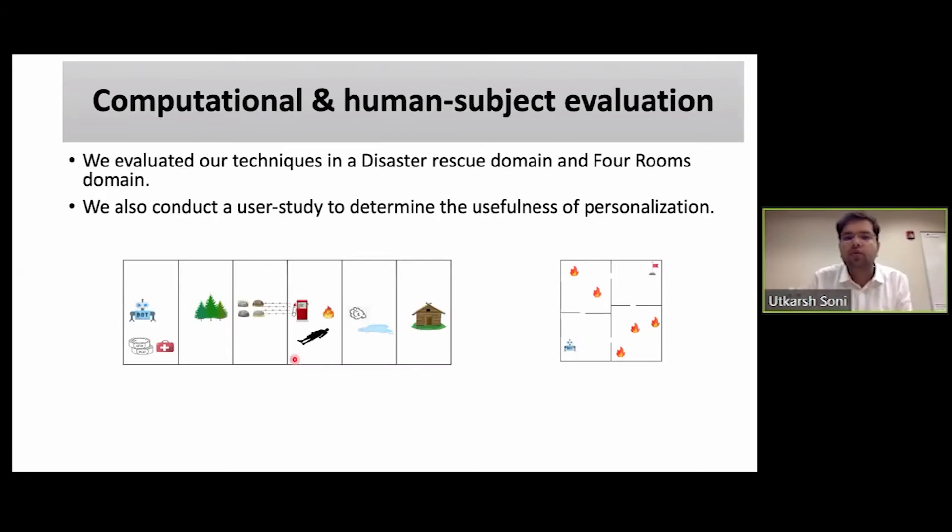Coming to evaluating our techniques, we did computational experiments as well as human subject evaluation. We evaluated our technique in a disaster rescue domain where the robot's task is to rescue a survivor and put them to a shelter while there are some obstacles in the task which the robot is equipped to navigate through, and there are some other tasks that it has to do like refuel at the fuel station. The other domain we took was the four rooms domain, which is a standard domain. We also conducted a user study to determine the usefulness of personalization.